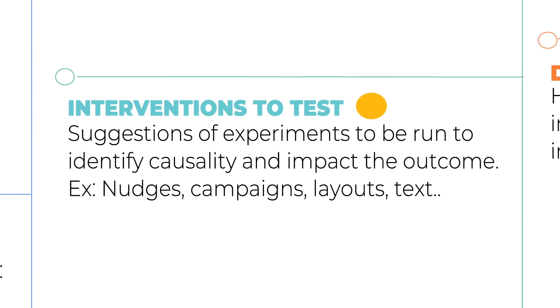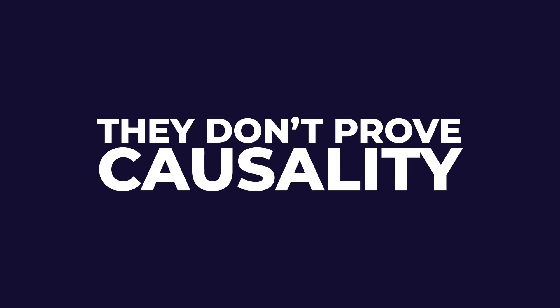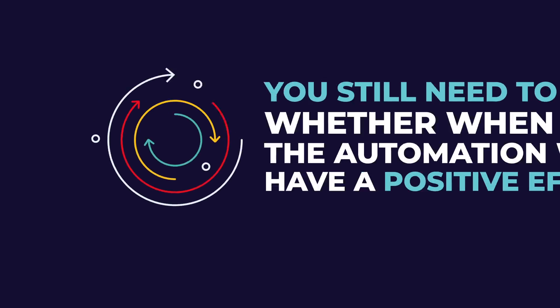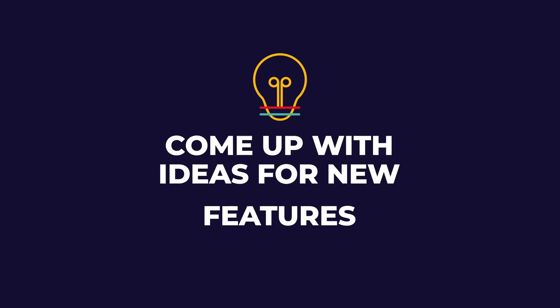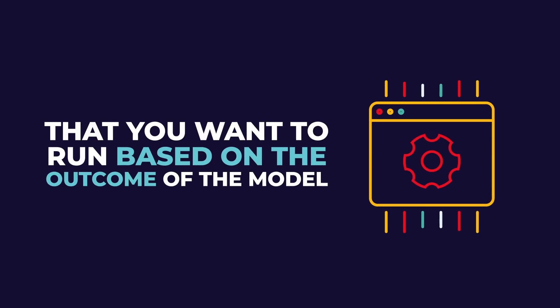Now let's move on to interventions to test — this is where your brain starts to be important again. Based on the outcome of the algorithm, which experiments do we want to start testing? AI models are not like A/B tests — they don't prove causality. You still need to test whether, when live, the automation will have a positive effect. In this section, you'll need to come up with ideas for new features, new offers, new campaigns, new nudges, new copy, or new marketing, product, or sales efforts to run based on the model's outcome. Then it's up to you to create the experiment so you can reliably tell whether it had a positive, neutral, or negative effect.